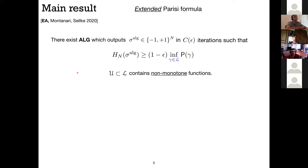Okay, so the main result here is the following. There exists an algorithm that outputs a feasible solution in C of epsilon iterations such that if you evaluate the Hamiltonian at that point, it's 1 minus epsilon times the infimum of P of gamma over a slightly larger class that I call L instead of U. So recall the ground state is given by the infimum over a class U, and here I have a class L that is slightly larger. And in particular it contains non-monotone functions. So the functions that are in L do not have to be increasing, which was a requirement for the definition of U.